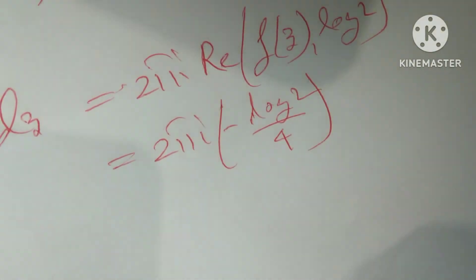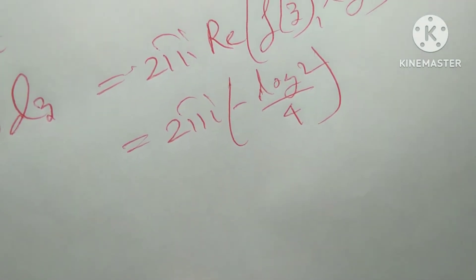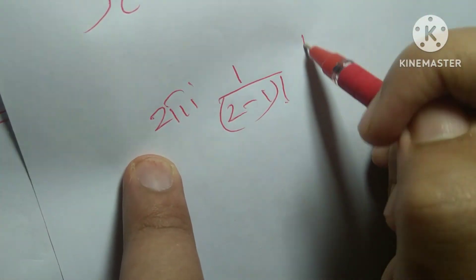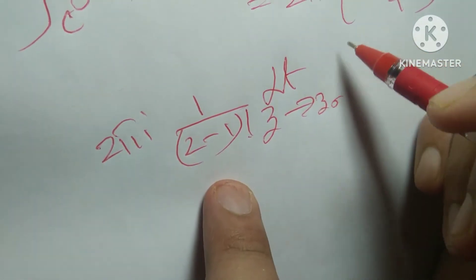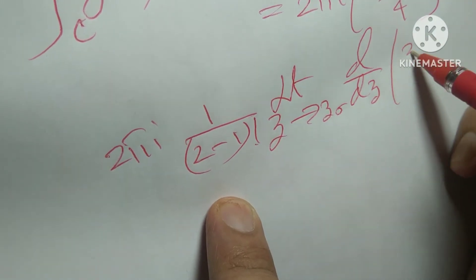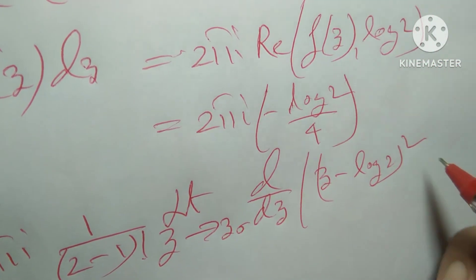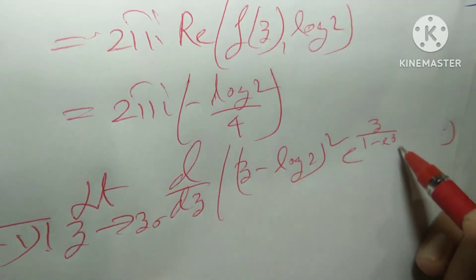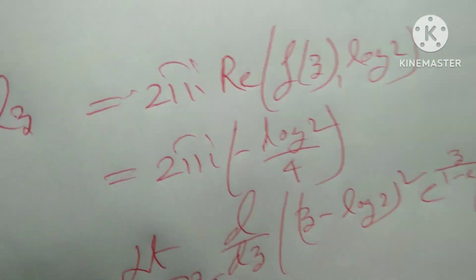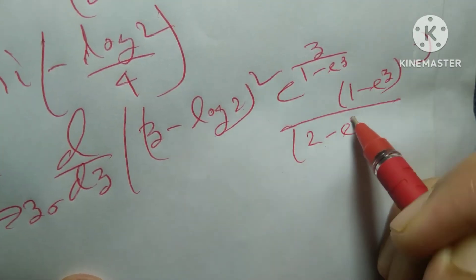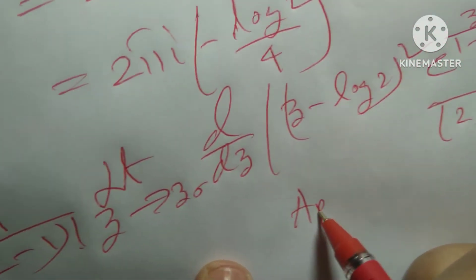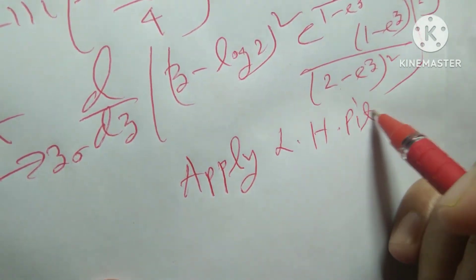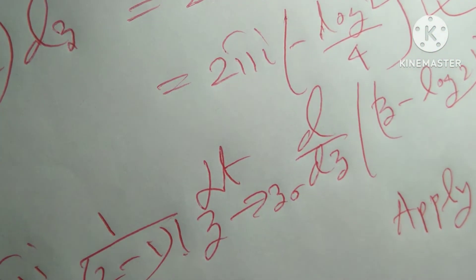How do I get this formula? The residue formula for a pole of order 2 at z = log 2 is: (1/(2−1)!) · d/dz [(z − log 2)² · e^z / ((1 − e^z)(2 − e^z)²)] evaluated at z = log 2. Apply L'Hôpital's rule and take the derivative, and we get this value — please calculate yourself to verify.